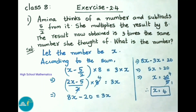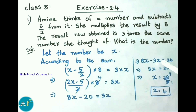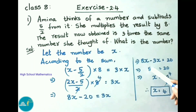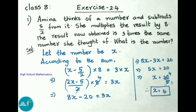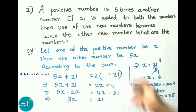Transposing: 8x − 3x = 20, so 5x = 20. Transposing the 5 (which is multiplying) it becomes division: x = 20/5 = 4. Therefore, the number Amina thought of is 4.